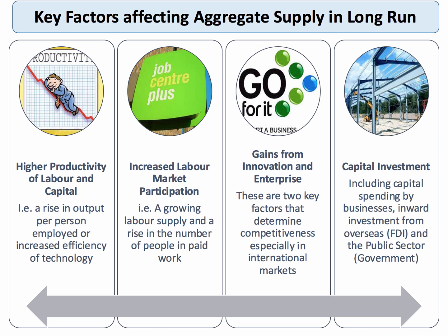A fourth factor — alongside productivity, labour market participation, and enterprise — is investment. For a country's productive potential to increase, a nation needs to invest sufficiently in new capital goods. That could be infrastructure for telecommunications, investment in water and sanitation industries, new housing, schools, hospitals, motorways, or factories. Some of that may come from the government or public sector, and in many cases a lot comes from foreign direct investment. These four factors are really important for a country's long-term aggregate supply-side capacity.